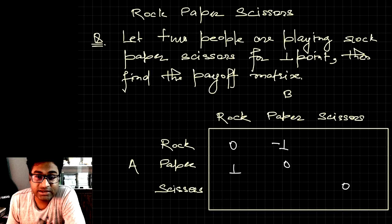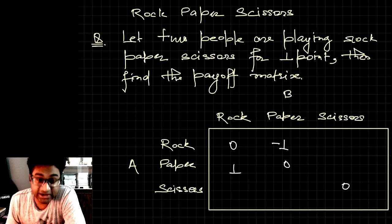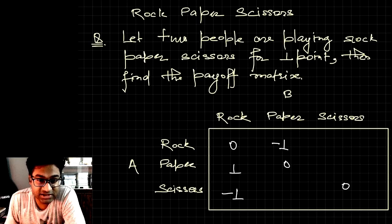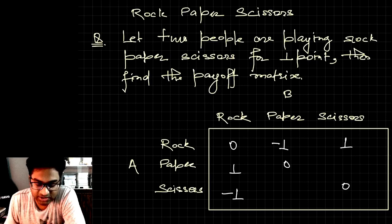If player A is using scissors and player B is using rock, rock will break the scissors so player A will lose and get minus one point. On the symmetric position, if player A is using rock and player B is using scissors, player A will win and get one point.